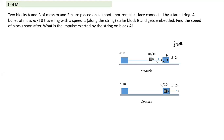If we sum up the normal reaction over the period it exists, that is the impulse. If the string were not there, this impulse would give forward velocity to block B and slow down the bullet until both acquire the same velocity. Once they reach common velocity, the normal impulse ends. We call this an impulsive force because it is very large in magnitude acting for a very short duration.